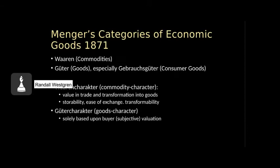Carl Menger's ontology includes a long discussion of kinds of products in the system. That is to say, there are commodities and there are goods, and there are end products of the transformation process between first production and the point where they are purchased by consumers. The distinction between commodities and consumer goods is, A, where they arise in the chain of transformation, and B, how they are valued.